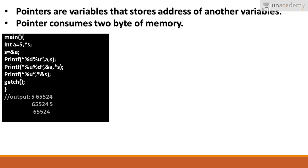Here we have declared pointer asterisk s and variable a = 5. We are storing the address of a in s. Printing a gives 5, and printing s gives the address of a. Printing asterisk s gives the value stored at that address, which is also 5, because asterisk s dereferences s to point to the value of a.